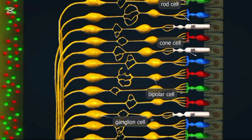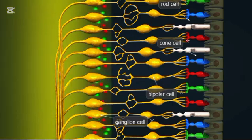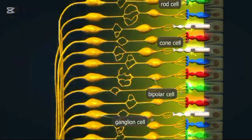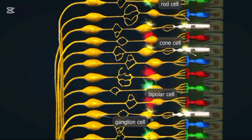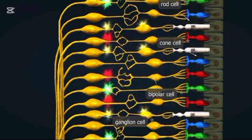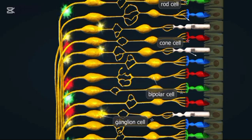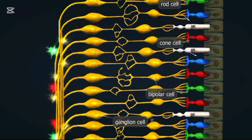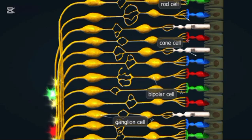The anterior chamber is the fluid-filled space between the cornea and the iris. It contains aqueous humor, which nourishes the eye and helps maintain its shape. The retina is the light-sensitive layer at the back of the eye. It captures light and sends visual information to the brain.